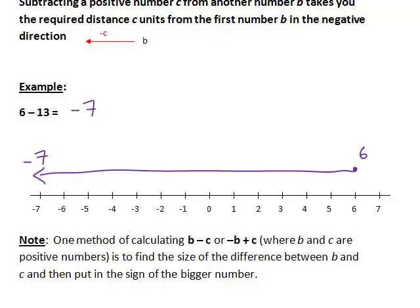It follows from this that one method of calculating b - c or -b + c, where b and c are both positive numbers, so that basically you have one of these effectively as positive and the other has a negative sign in front of it, is to find the size of the difference between the two positive numbers involved and then put in the sign of the bigger number.